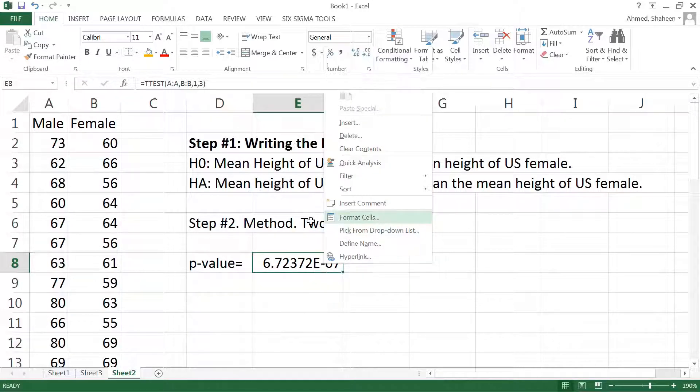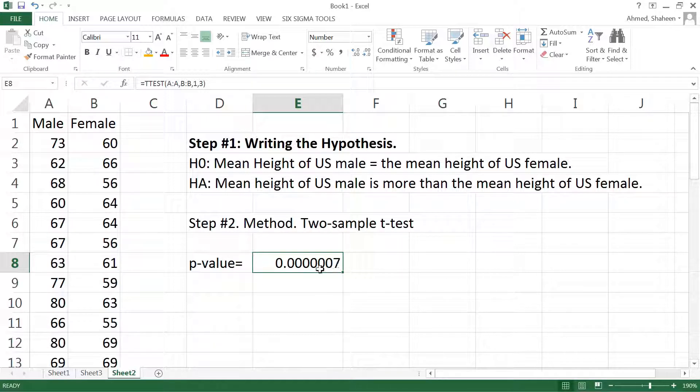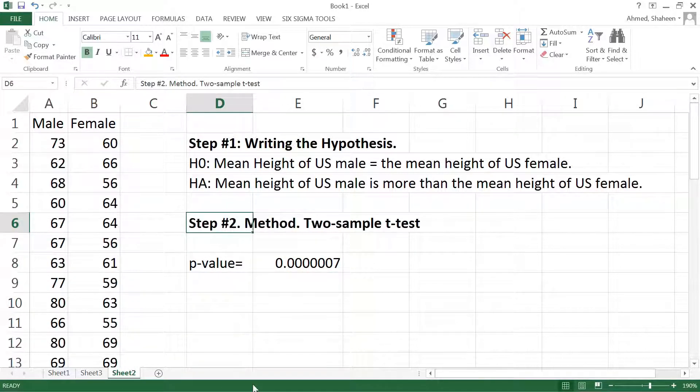Let me change that to some different format. So basically seven out of a million times if we run this study, then there will be a chance that the mean height of female could be taller. However, in this case it's not. So the chance is very low. Because the chance is very low for this null hypothesis to happen, we reject this hypothesis.